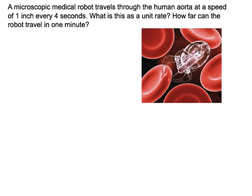Alright, so another kind of cool thing. As technology advances, we keep getting into what's called nanotechnology. And so we have little things like microscopic robots that can actually travel through the human body. So let's say this little one here can travel through the aorta at a speed of 1 inch every 4 seconds. What is this as a unit rate? So currently they tell us it's 1 inch every 4 seconds. So 1 inch every 4 seconds is like saying 1 inch per 4 seconds. So that's a rate that looks like that in fraction form.